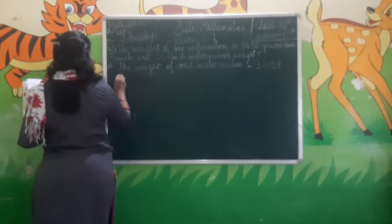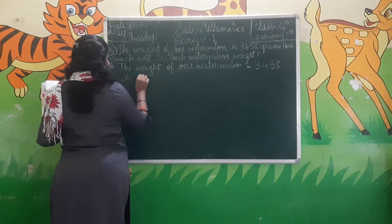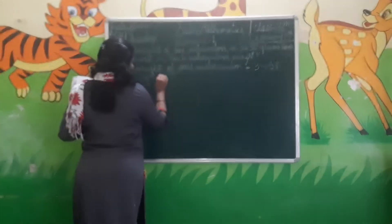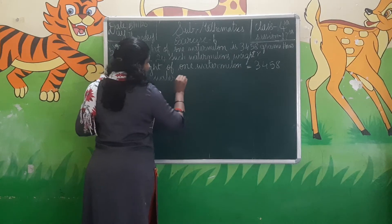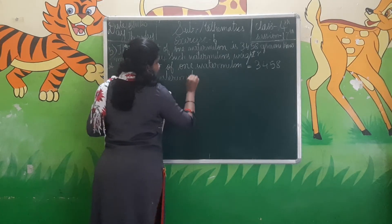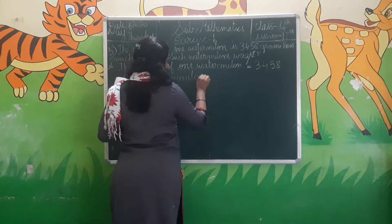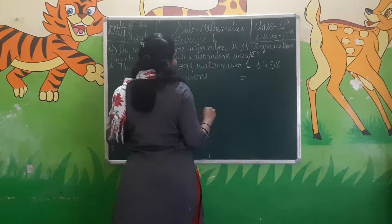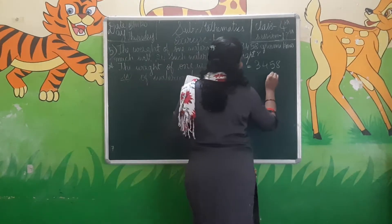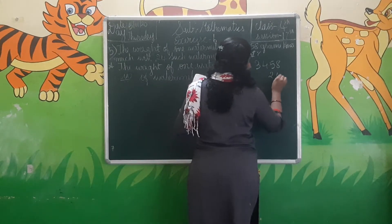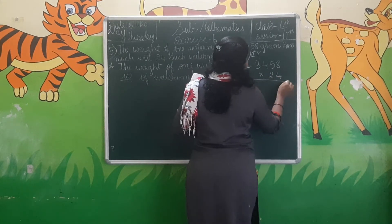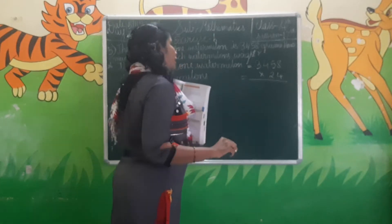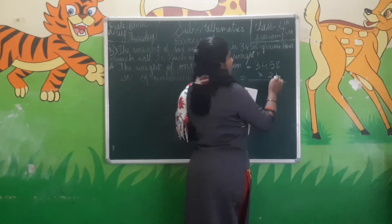So the number of watermelons we have to calculate is 24. Now you have to multiply 3458 into 24.